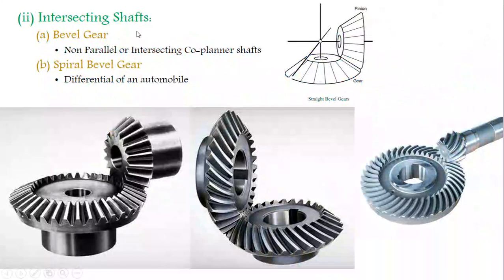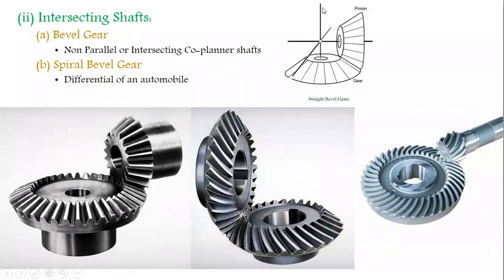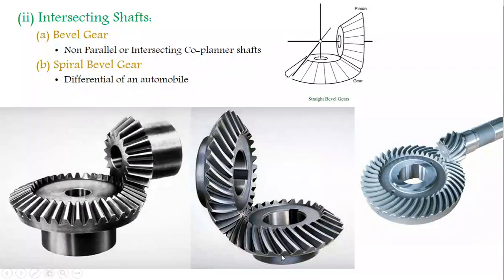The next type is intersecting shaft. In this arrangement, the gear axis is vertical and the pinion axis is at an angle; both axes intersect at any one point. This kind of arrangement is called an intersecting shaft arrangement. The best example is the bevel gear — this is a straight bevel gear, and there is also a spiral or curved bevel gear.